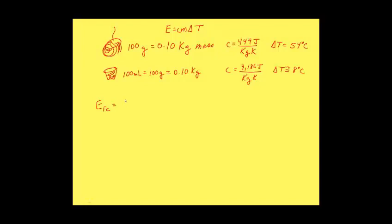We have a specific heat of iron, 449 joules for every kilogram Kelvin, times the 0.10 kilograms, times the 54 Kelvin. That is equal to approximately 2,300 joules of energy that was lost by the iron.